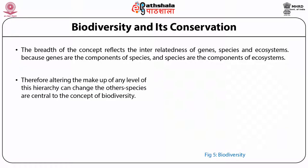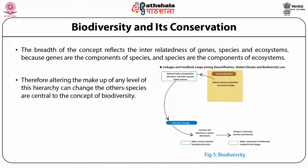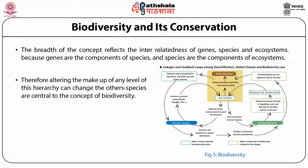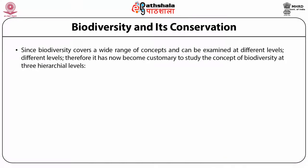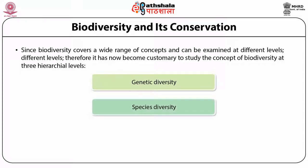Altering the makeup of any level of this hierarchy can change the other levels — species are central to the concept of biodiversity. Since biodiversity covers a wide range of concepts and can be examined at different levels, it has become customary to study biodiversity at three hierarchical levels: genetic diversity, species diversity and ecosystem diversity.